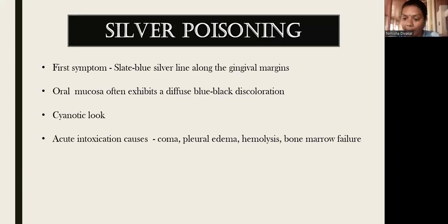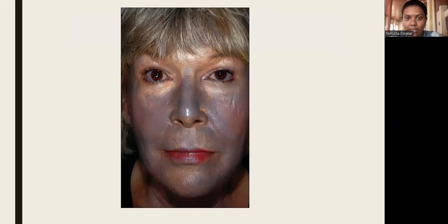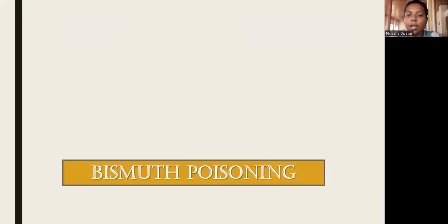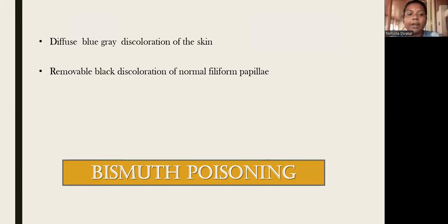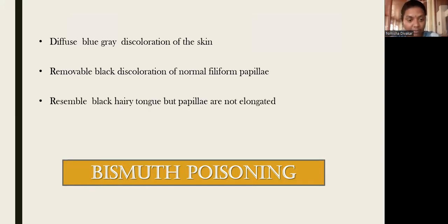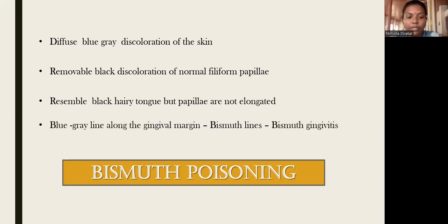Silver poisoning is also known as argyria. The next heavy metal is bismuth. In bismuth poisoning, there will be a diffuse bluish-gray discoloration of the skin and a removable black discoloration of the normal filiform papillae — the filiform papillae will not be enlarged. This can be differentiated from black hairy tongue, in which the filiform papillae are elongated. Black hairy tongue is mainly caused by smoking.